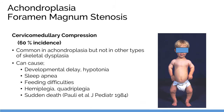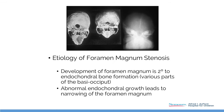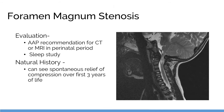The top problem in achondroplasia is foramen magnum stenosis — it slows growth, slows development, and can kill in early life. The entire base of the skull is endochondral bone formation, not intramembranous, so the impact is a small foramen magnum leading to stenosis. Current recommendations are to image early in life, but most of us rely on physical exam and sleep studies to monitor this.